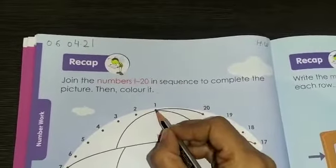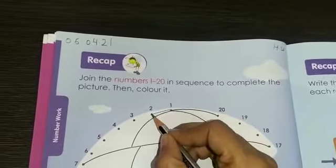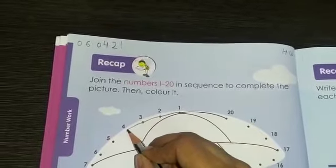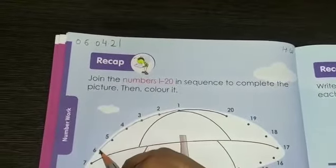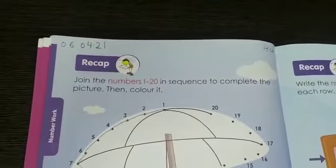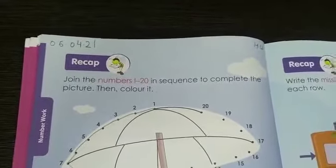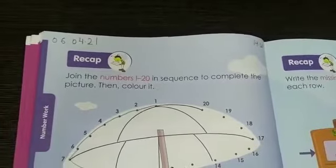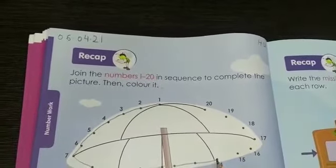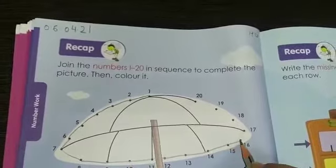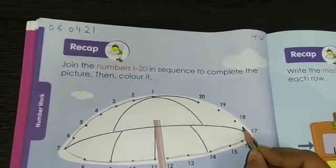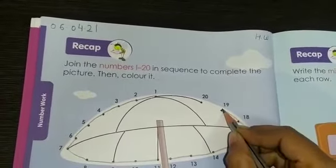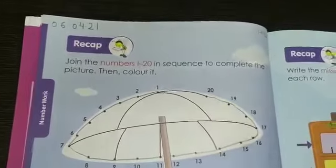And start doing counting also. So 1, 2, 3, 4, 5, 6, 7, 8, 9, 10, 11, 12, 13, 14, 15, 16, 17, 18, 19 and then 20.